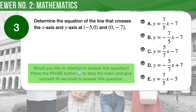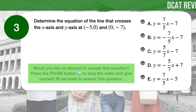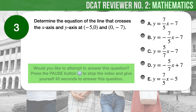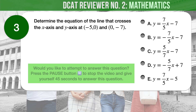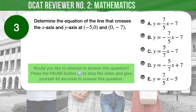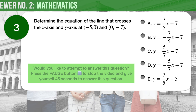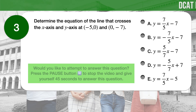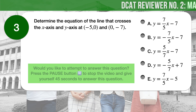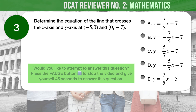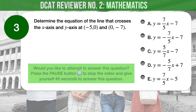Question number 3. Determine the equation of the line that crosses the x-axis and y-axis at negative 5 and 0, and 0 and negative 7. A. y equals 7 over 5 times x, minus 7. B. y equals negative 7 over 5 times x, minus 7. C. y equals 5 over 7 times x, minus 7. D. y equals negative 5 over 7 times x, plus 7. E. y equals 7 over 5 times x, minus 5.